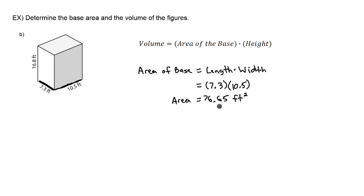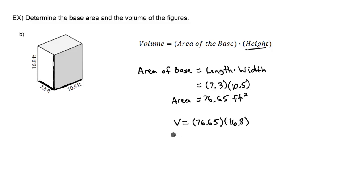Now we take that base area and use it to find volume. Volume is the area of the base, 76.65, multiplied by the height of this prism, which is 16.8 feet. Multiplying those together gives us 1,287.72 feet cubed.